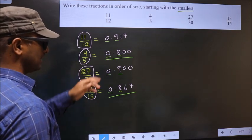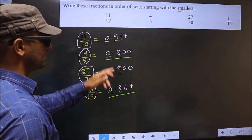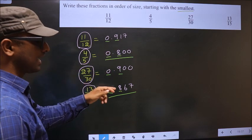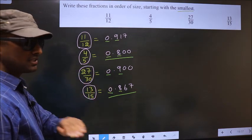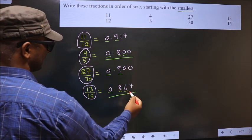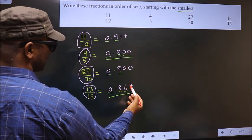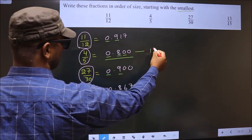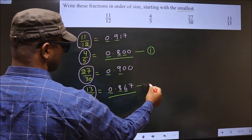So now we should decide the smallest from these two. For that, you take the next number. Here we have 0, here 6. 0 smaller than 6, so this is the smallest. This is the second smallest.